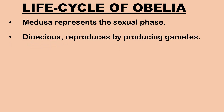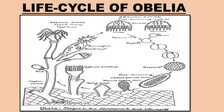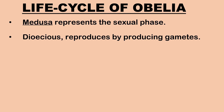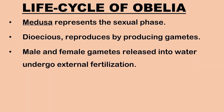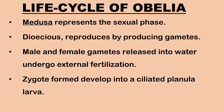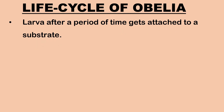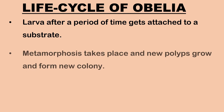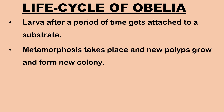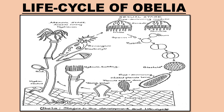Medusa represents the sexual phase in the life cycle of Obelia. Medusae are dioecious — they are either male or female — and reproduce sexually by producing gametes. Eggs and sperms released into the water undergo external fertilization. A zygote is formed which develops into a ciliated planula larva. The larva swims for a short period, then attaches to a substrate and metamorphoses into a new polyp, which grows and forms a new colony. Thus, Obelia's life cycle demonstrates dimorphism and metagenesis between the asexual haploid polyp generation and the sexual diploid medusa generation.